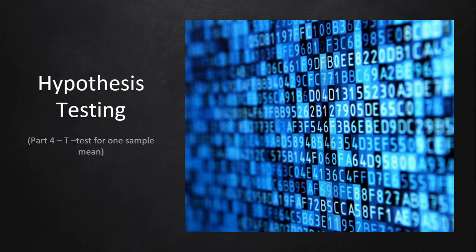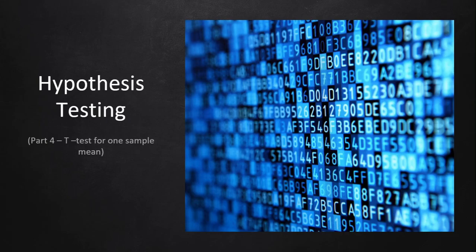This is the fourth part of our six-part series for hypothesis testing. We'll be covering the t-test for one sample mean. To recall: the first part was introductory, covering concepts and steps. The second part covered the z-test for one sample mean, the third part was the z-test for two sample means, part five will be the t-test for two sample means, and the last part will be on chi-square test.